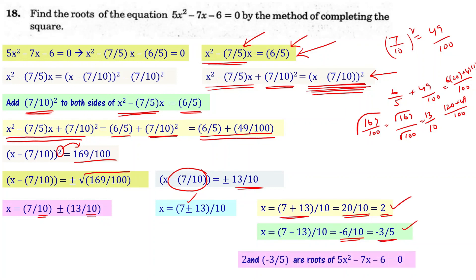These are the two roots of the given quadratic equation 5x² - 7x - 6 = 0.